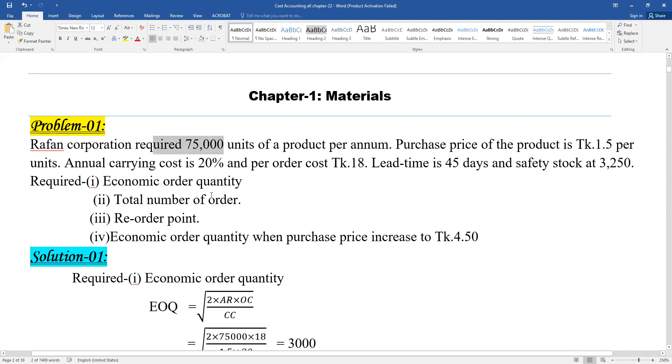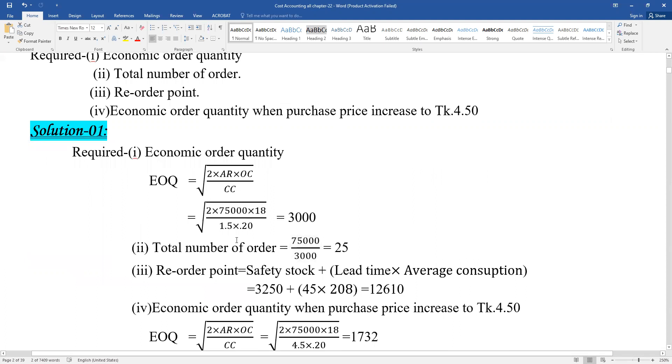The order number or total number of orders can be calculated by dividing the annual demand by the EOQ. This gives us the total number of orders per year.